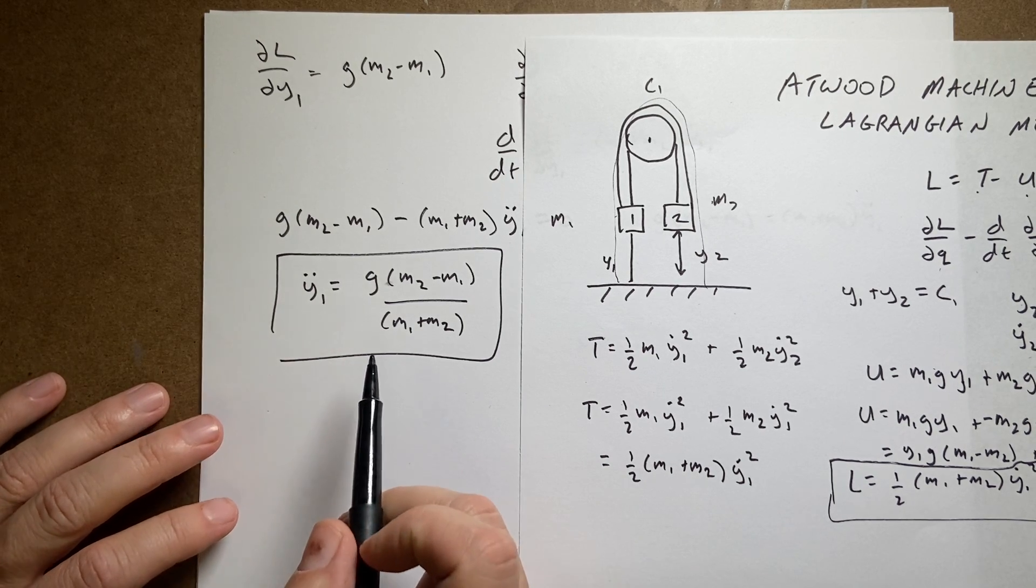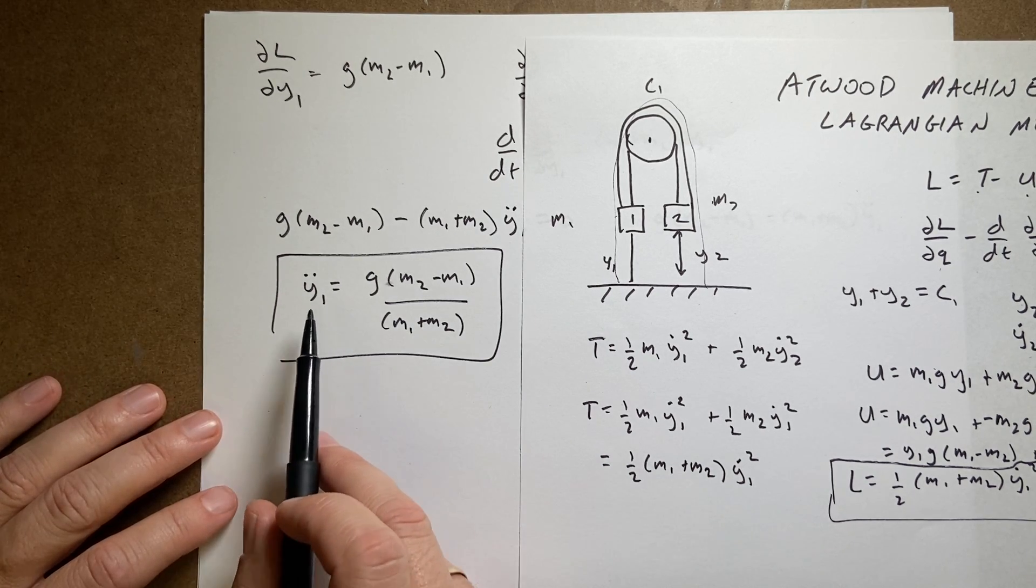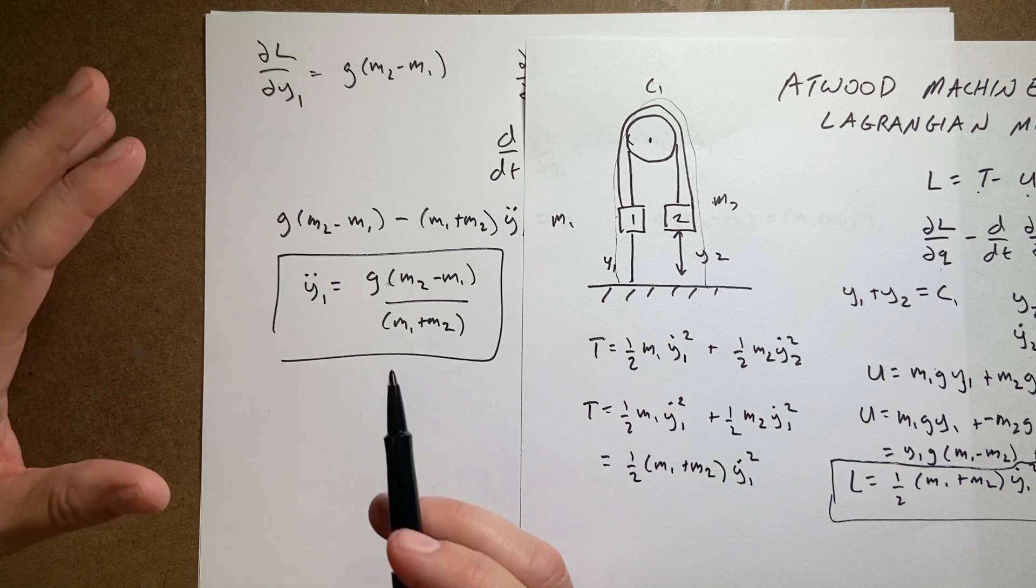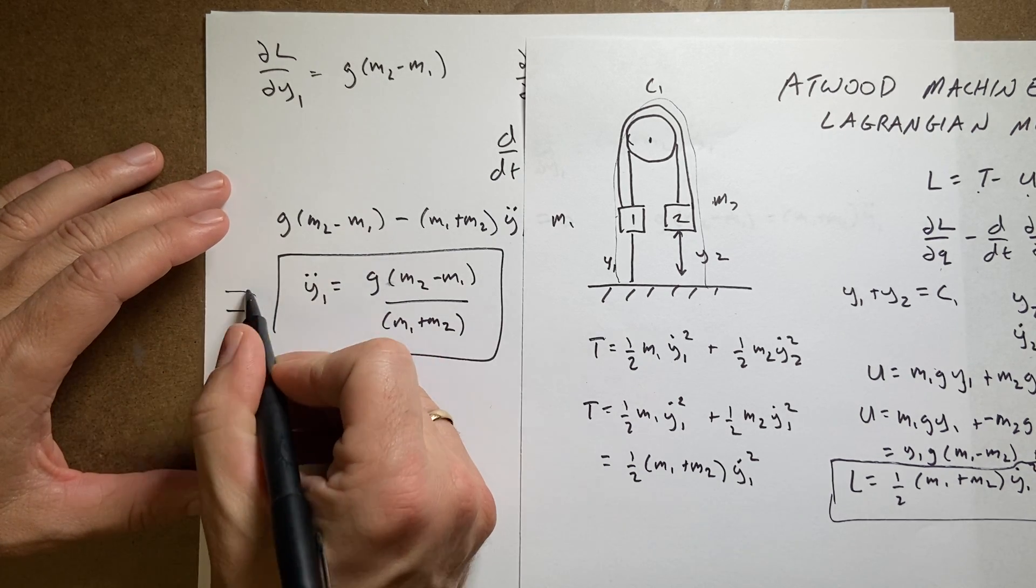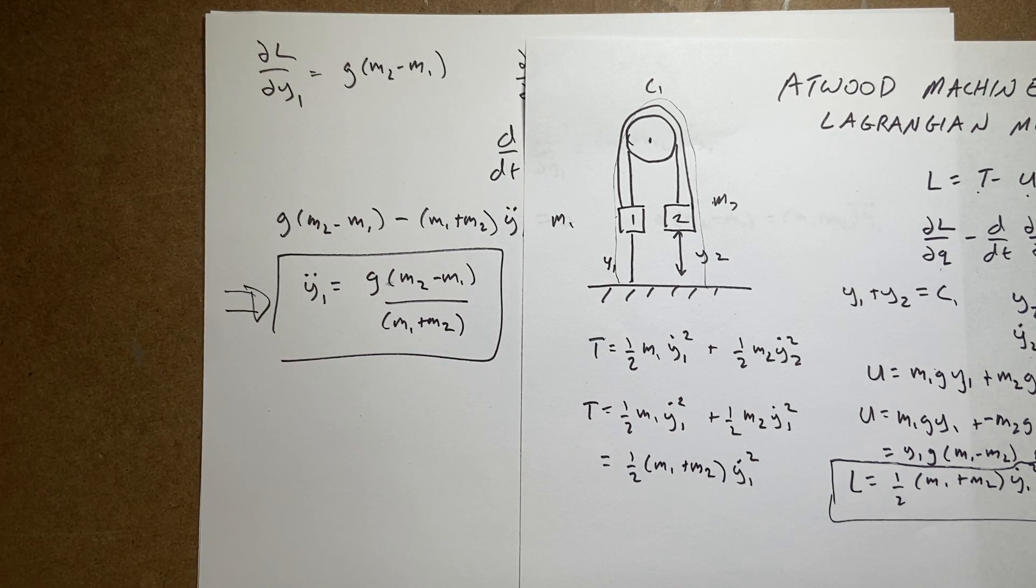We can do this problem a lot of different ways, but there you go. So I mean you could then integrate this twice to get the position, but I think here this is a good place to stop because that really solves the problem. This acceleration of an Atwood machine. And there you go. We're going to do some more problems.